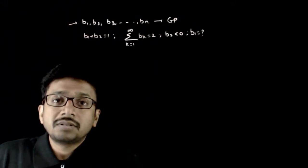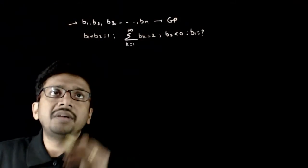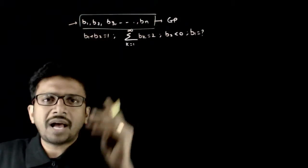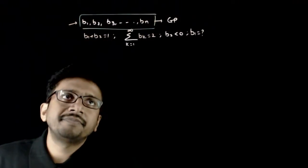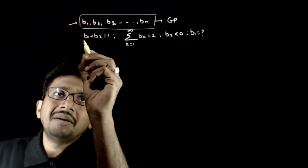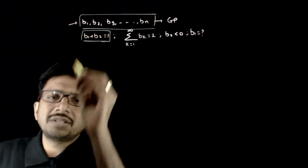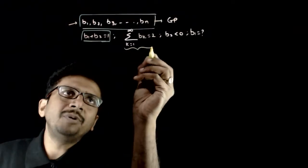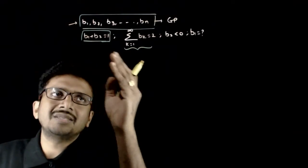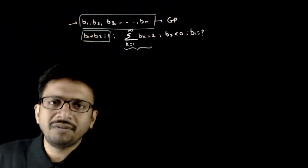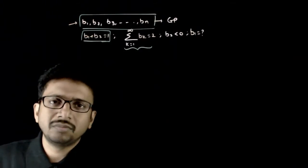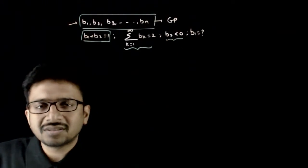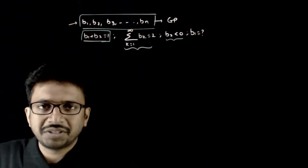Welcome students. In this question, you are given that b1, b2, b3 up to bn are n terms of a GP. The sum of the first two terms b1 plus b2 is equal to 1, and the sum up to infinity is equal to 2. The second term b2 is less than 0. The question asks: what is the value of b1?